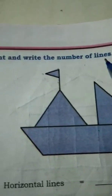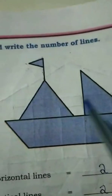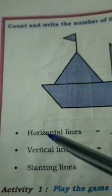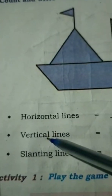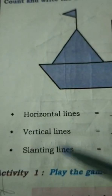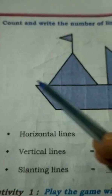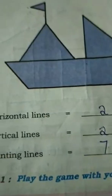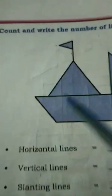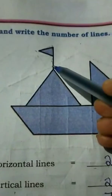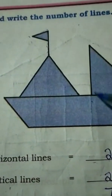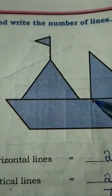They have given a picture of a board and asked you to count the horizontal lines, vertical lines, and slanting lines. Let's see how many horizontal lines there are — it's one and two, so two horizontal lines. For vertical lines, it's one and two — two vertical lines.